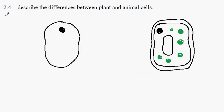EdXL Biology 2.4. We're describing the differences between plant cells and animal cells. In the diagrams here, this is the animal cell and this one is the plant cell.